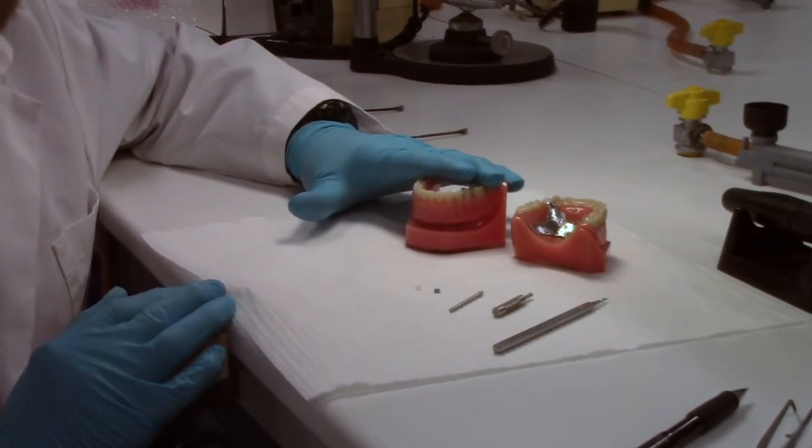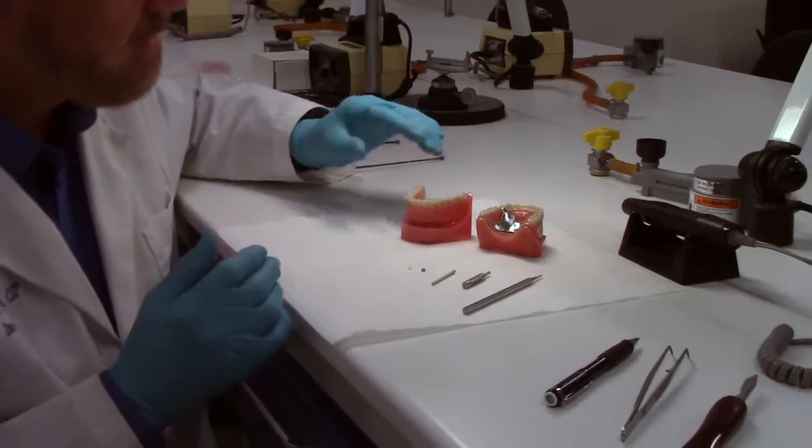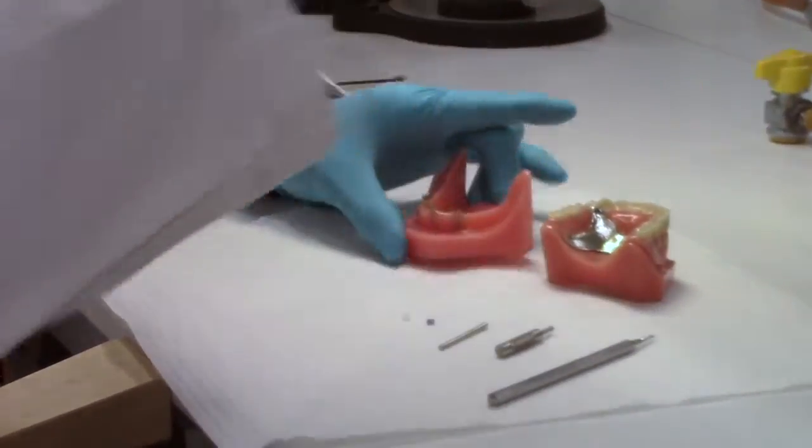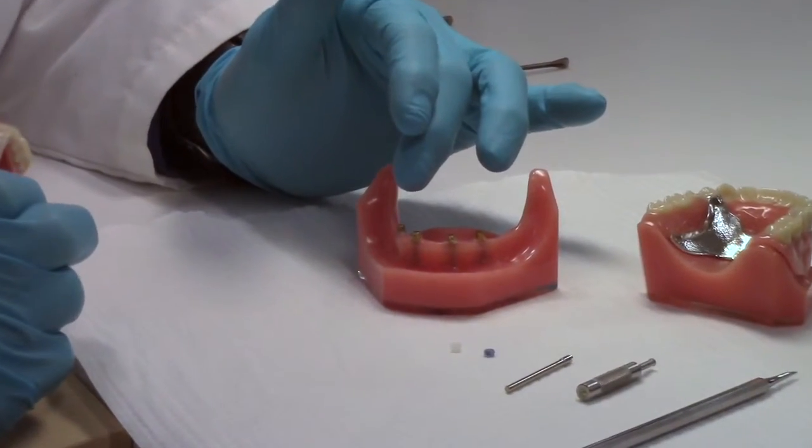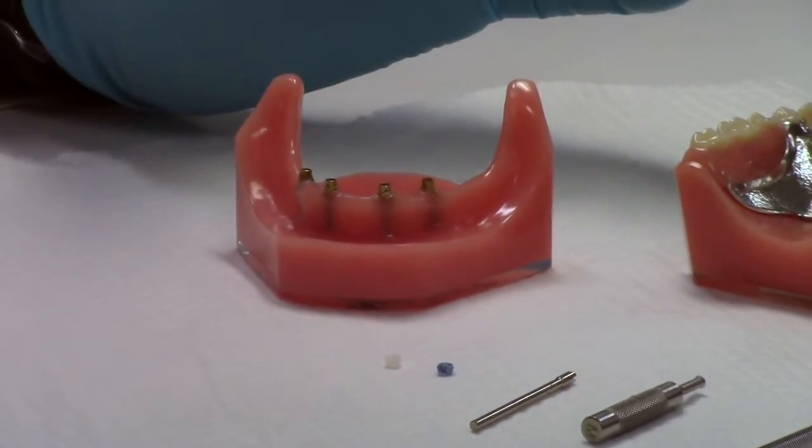Now I have here an overdenture and I've got a partial denture, and I'm going to change out one male from each. So here we see an overdenture version. These could, once again, be on roots, on implants, mini implants. So there's a number of versions.